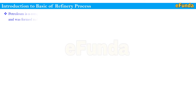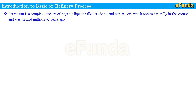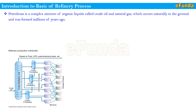Introduction to basics of refinery processes. Petroleum is a complex mixture of organic liquid called crude oil and natural gas, which occurs naturally in the ground and was formed millions of years ago. Crude oil varies from oil field to oil field in color and composition, from a pale yellow, low-viscosity liquid to heavy black, thick consistencies.